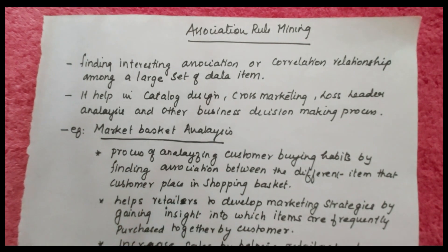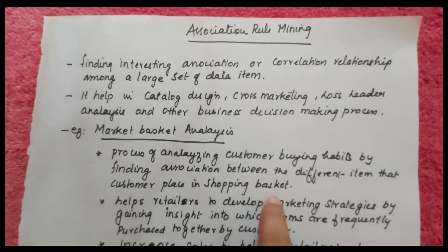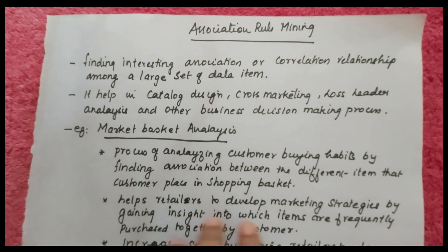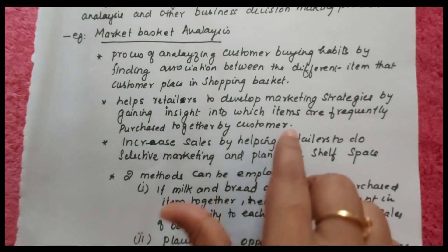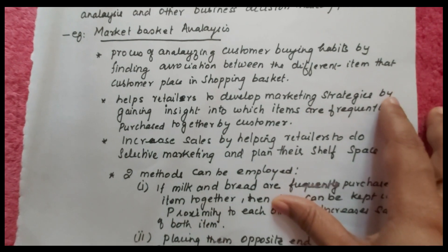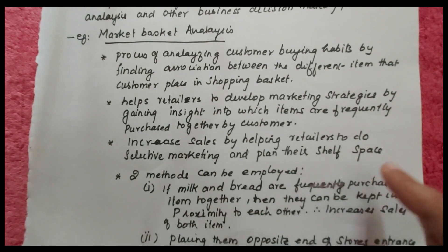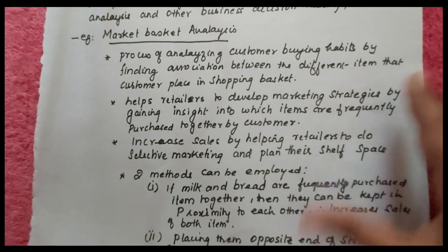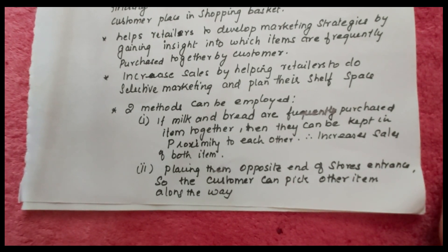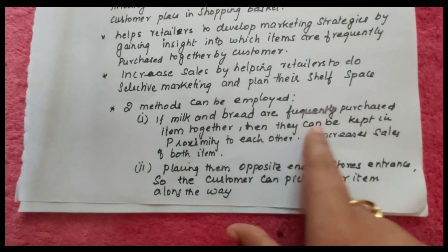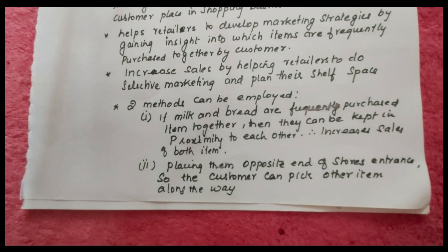The main example is market basket analysis — the process of analyzing customer buying habits by finding associations between different items placed in a shopping basket. The goal is to find which items customers take together. It helps retailers develop marketing strategies by gaining insight into which items are frequently purchased together. One method: if milk and bread are frequently purchased together, they can be kept in proximity to each other, which increases the sales of both.